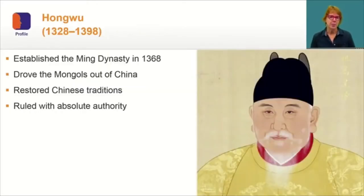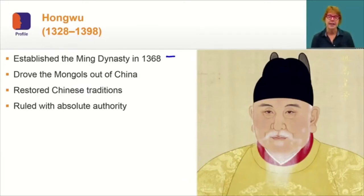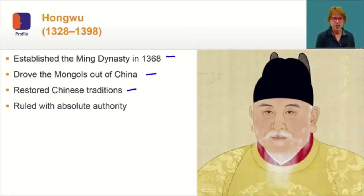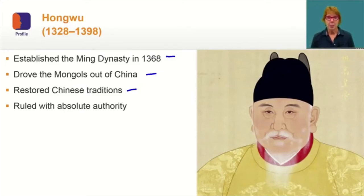Hongwu was the first emperor of the Ming Dynasty. He established the Ming Dynasty in 1368. He was the son of a peasant family but joined a resistance group working to end Mongol rule. He drove the Mongols out of China, and he's best known for restoring order to China by driving out the Mongols who had ruled since 1279 and restoring Chinese traditions. He restored many important Chinese traditions, but did so with absolute authority.